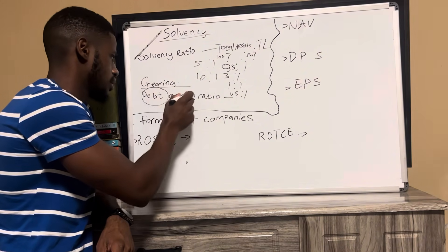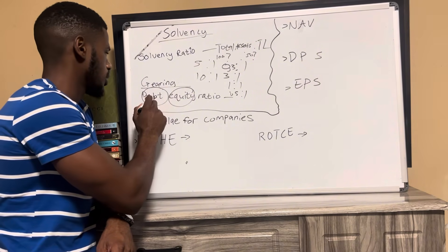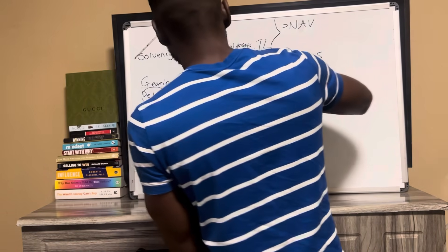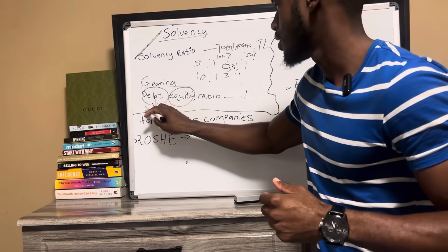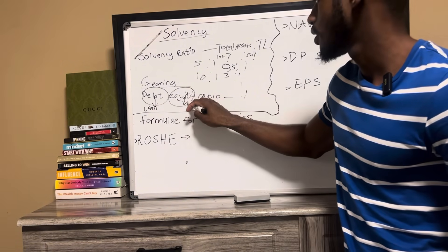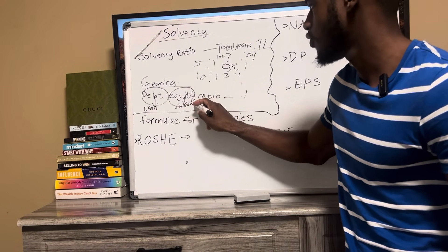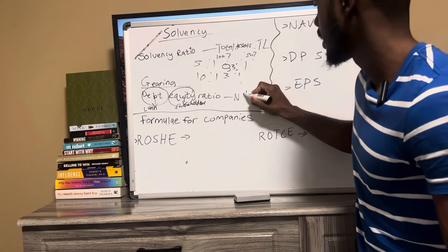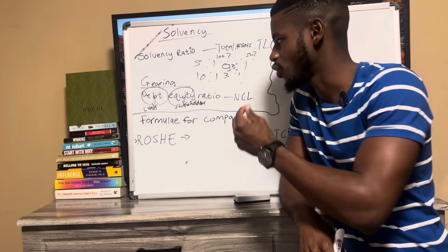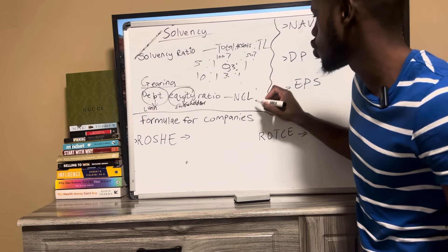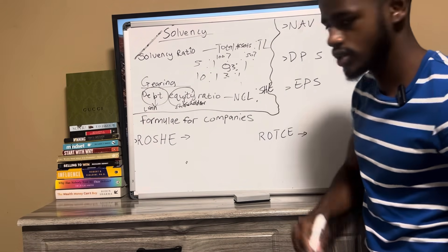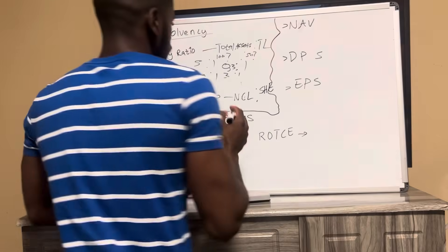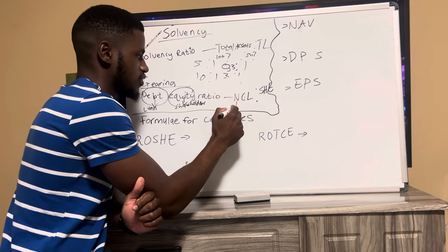In the debt equity ratio, we have debts and equity. Debts in this case refers to our non-current liability or our loan. Equity — if you're in Grade 12 it's shareholders' equity; if you're in Grade 11 it's partners' equity. The formula is non-current liability is to shareholders' equity for Grade 12, or partners' equity for Grade 11.